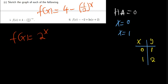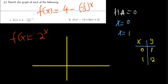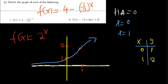Now I can sketch. On the axes I mark x values 0 and 1, and y values 1 and 2. The horizontal asymptote is at y = 0. Plotting (0, 1) and (1, 2), the graph leans away from the asymptote and curves upward. That is the parent graph of f(x) = 2^x.